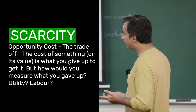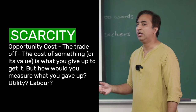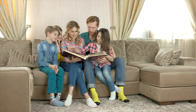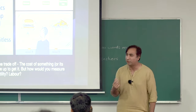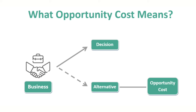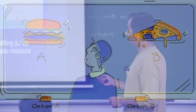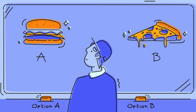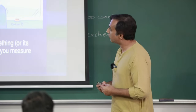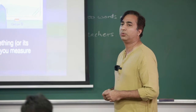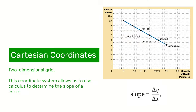How would you measure what you give up? Would it be in terms of utility, labor? How would you evaluate giving up an evening with your children and family - what value would you put on that? For a business, opportunity cost seems clear: invest in stocks or bonds, how much do you win or lose? But the central question remains: how do we actually evaluate cost?